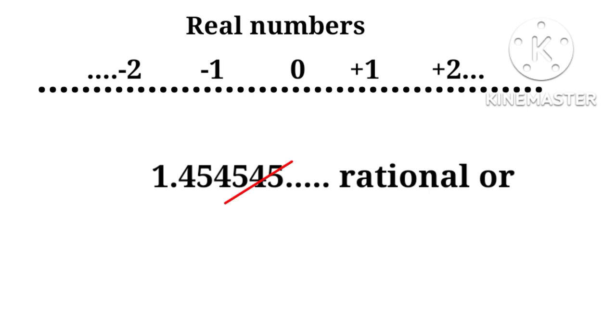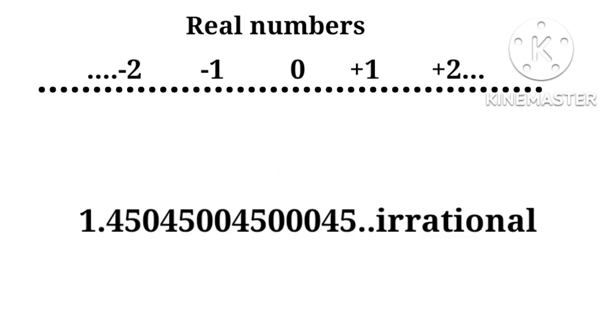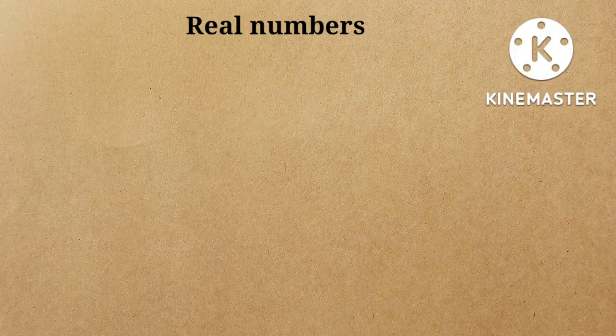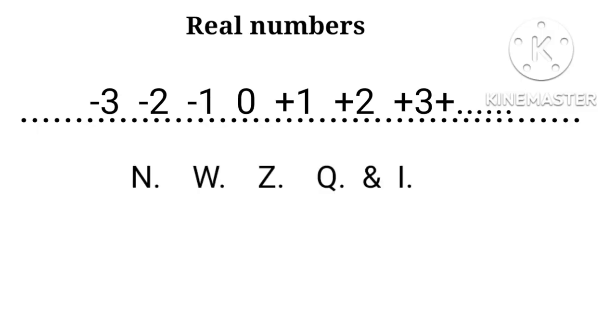Repeating is rational and non-repeating is irrational. We have defined natural numbers, whole numbers, integers, rational numbers, and at last, irrational numbers.